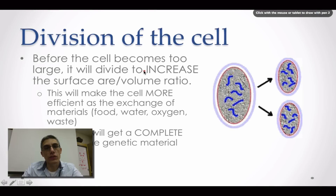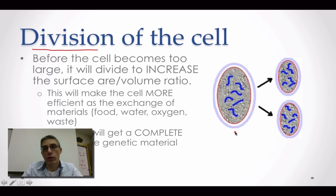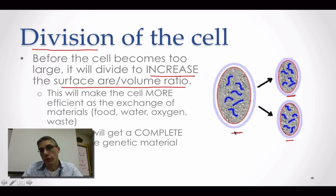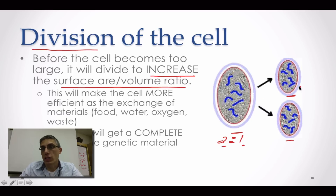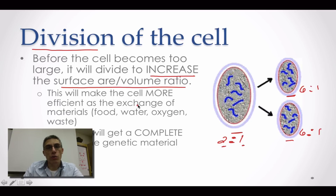One of the ways the cell will take care of this is by dividing. When a very large cell divides and becomes two very small cells, that's going to increase the surface area to volume ratio. For example, if the large cell had a ratio of 2 to 1, once it divided, each new cell might have a ratio of 6 to 1 — six units of surface area to one unit of volume — making the cell much more efficient at the exchange of materials.